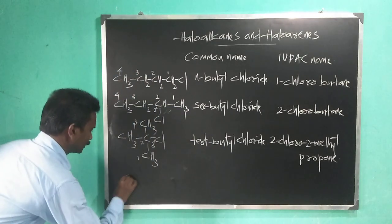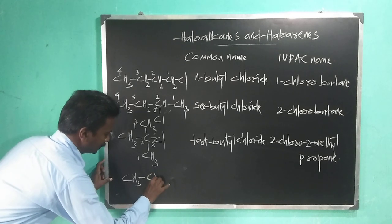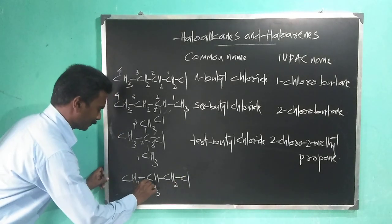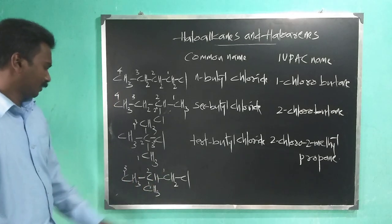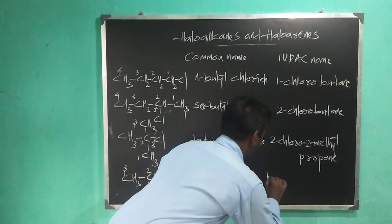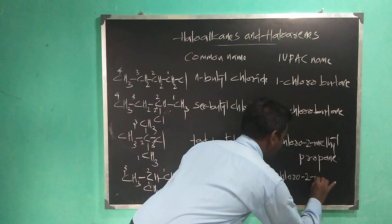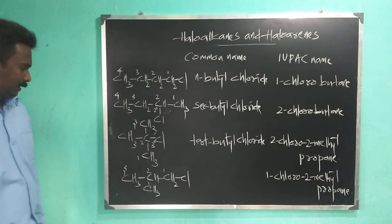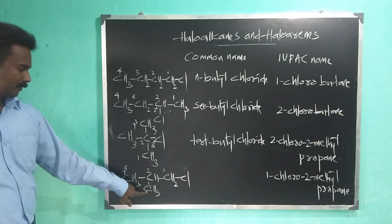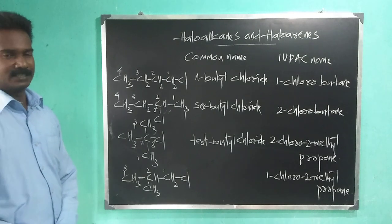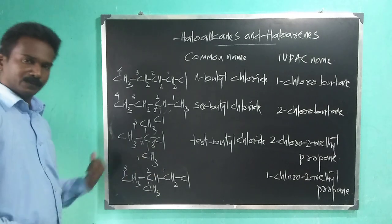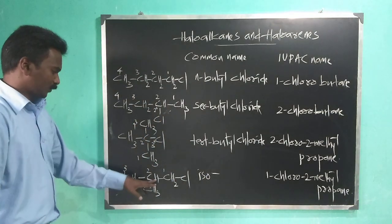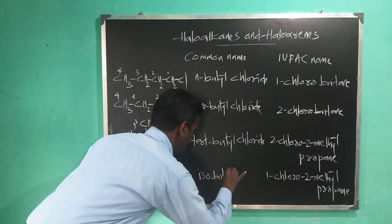One more example: CH3-CH(CH3)-CH2-Cl. The IUPAC name is 1-chloro-2-methylpropane. The second carbon is getting a methyl group. The prefix 'iso' is used when the methyl branch comes at the end of the chain, so the common name is isobutyl chloride.